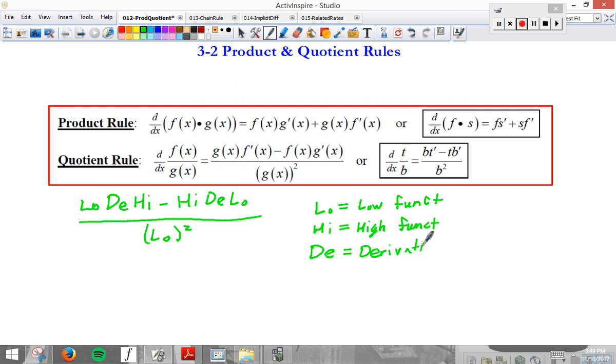So this trick is not helpful if you don't know what these three mean. Low d high, the derivative of f, minus high f times the derivative of low, g, all over low, original low function.